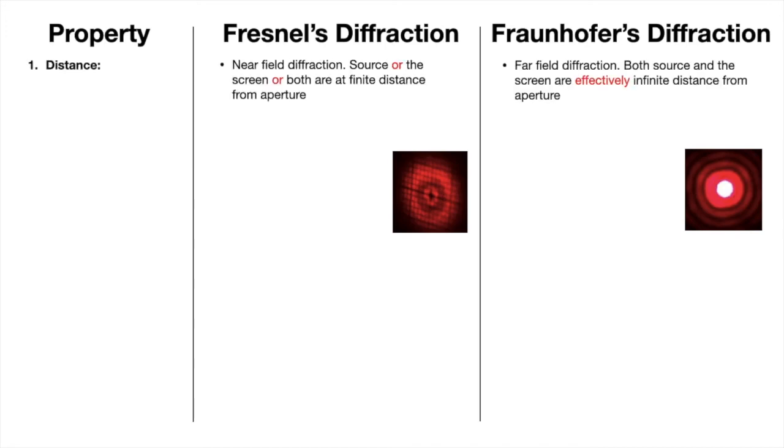So the first property: distance. In Fresnel's class, the source or the screen or both are at finite distance from the aperture, so it is called near field diffraction. In the case of Fraunhofer's diffraction, both the source and the screen are effectively at infinite distance from the aperture. Hence, it is called far field diffraction.